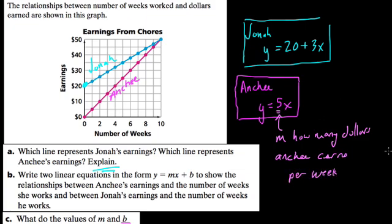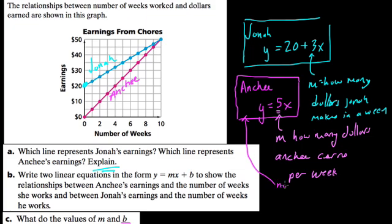And the same thing is true for Jonah, except it's how many dollars M equals, how many dollars Jonah makes in a week. Now for Anchi, the y-intercept is 0. And that 0, you might say, means there's no initial payment.